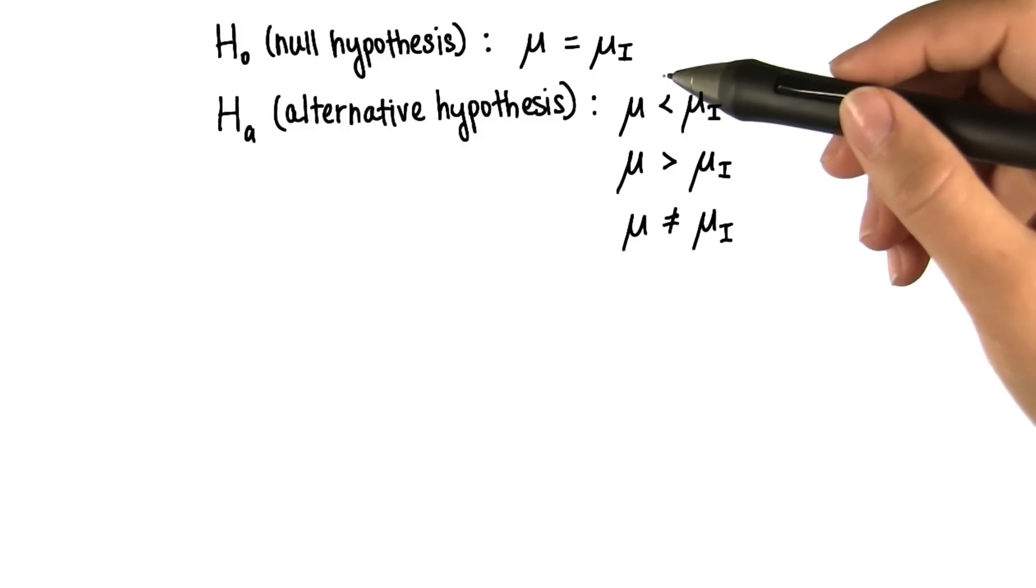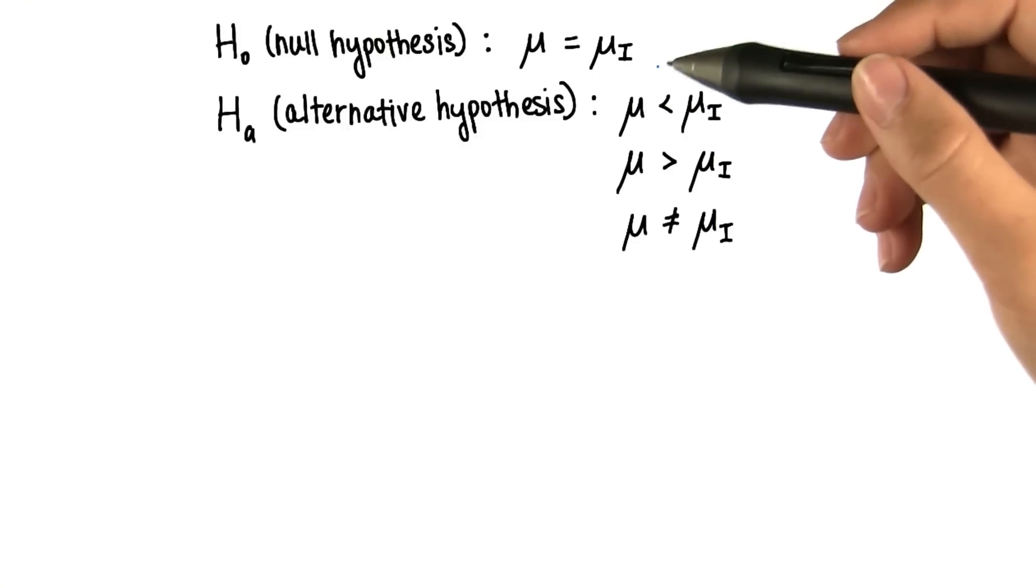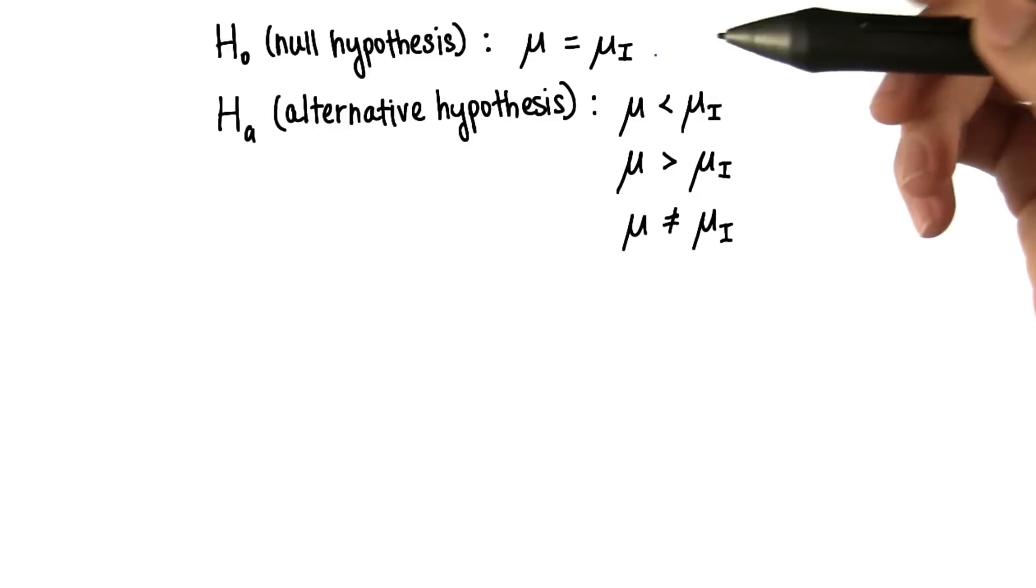We can't prove that the null hypothesis is true. We can only obtain evidence to reject the null hypothesis. Let's take a simple example.